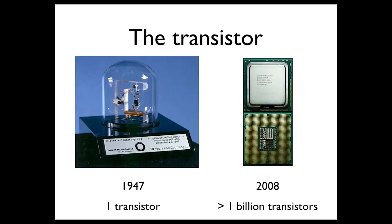It all starts with transistors. We invented the transistor in 1947, and a lot of people say it's the greatest invention of the 20th century. Since then, we've been making billions and billions of them. Current processors, like this Intel Pentium 4 on the right, have over a billion transistors in every processor.